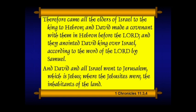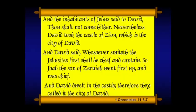And David and all Israel went to Jerusalem, which is Jebus, where the Jebusites were the inhabitants of the land. Jebus, which becomes Jerusalem, is midway between — it's actually in Benjamin, not Judah, which makes it a good choice as a compromise between north and south in a tribal sense. And the inhabitants of Jebus said to David, 'Thou shalt not come hither.' Nevertheless, David took the castle of Zion, which is the city of David. David said, 'Whosoever smiteth the Jebusites first shall be chief and captain.' So Joab, the son of Zeruiah — who is a half-sister of David — went up first and was chief. And David dwelt in the castle; therefore they called it the city of David.